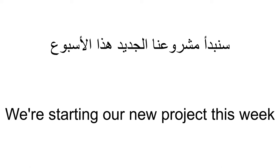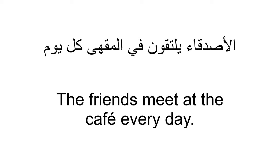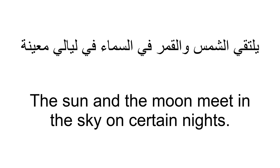Another example: سنبدأ مشروعنا الجديد هذا الأسبوع — We will begin our new project this week. Next we have the verb يلتقي, meaning 'to meet,' 'to connect,' or 'to encounter.' It is used to describe the action of two or more people or things coming together. Examples: الأصدقاء يلتقون في المقهى كل يوم — The friends meet at the café every day. يلتقي الشمس والقمر في السماء في ليالي معينة — The sun and moon meet in the sky on certain nights.